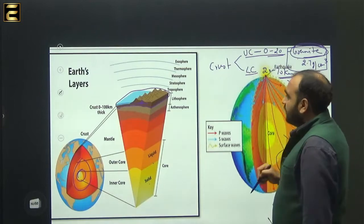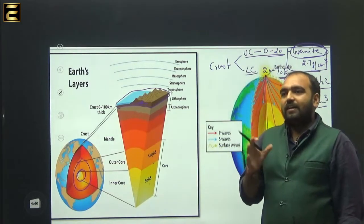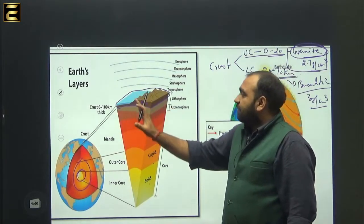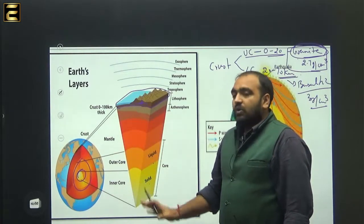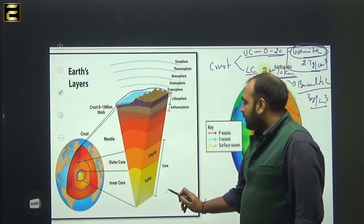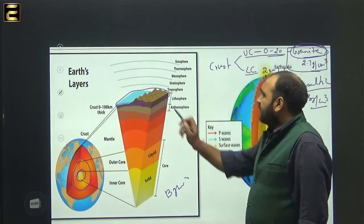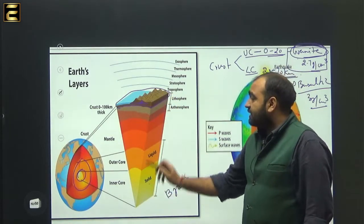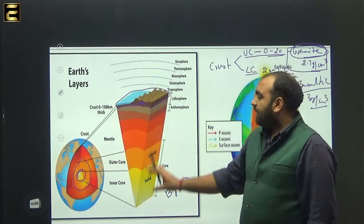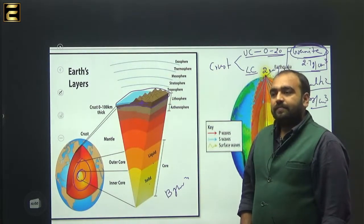Below that is the lower crust, which is generally found between 20 to 70 kilometers. It is formed of basaltic material and has a density of 3 grams per centimeter cube. Generally, density increases from the crust towards the core — the density of the core is around 13 grams per centimeter cube — and temperature also increases from the upper part towards the central core.